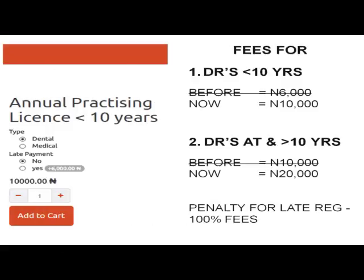Recently, the 2017 license fee was upgraded from 6,000 Naira to 10,000 Naira for doctors less than 10 years, and from 10,000 Naira to 20,000 Naira for doctors at or greater than 10 years. Payment should be made before the end of the year — if not, it will attract a 100% late fee, which is twice the value. So a doctor less than 10 years would pay 10,000 plus 10,000, totaling 20,000 Naira, and a doctor greater than 10 years would pay 20,000 plus 20,000, totaling 40,000 Naira.